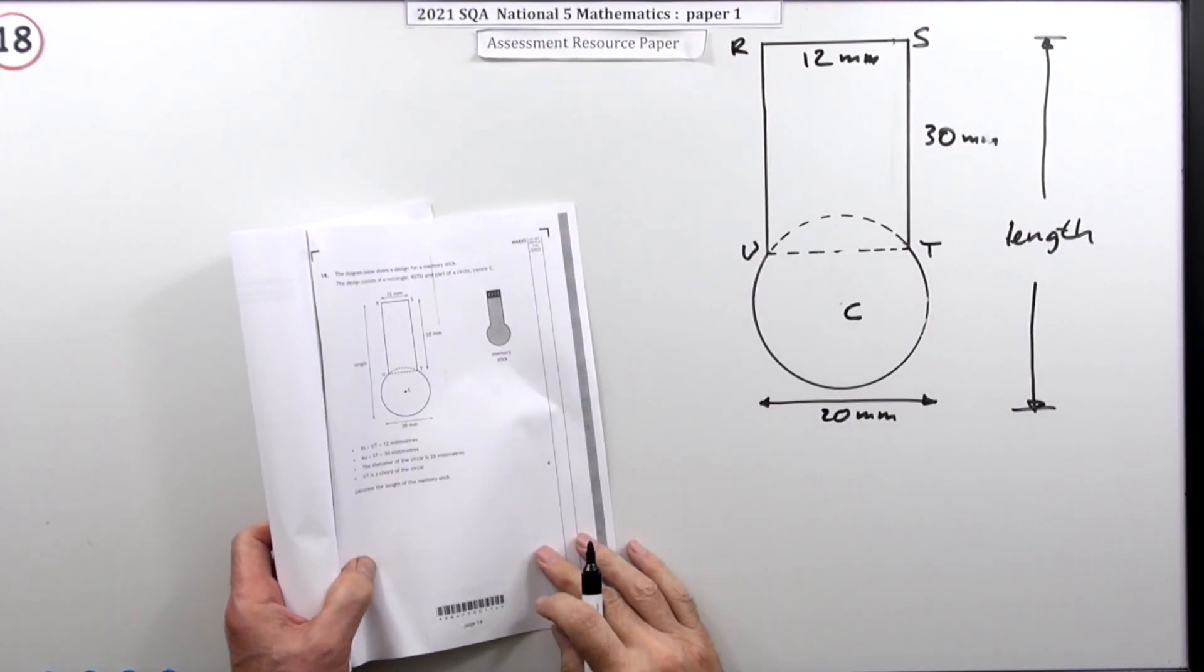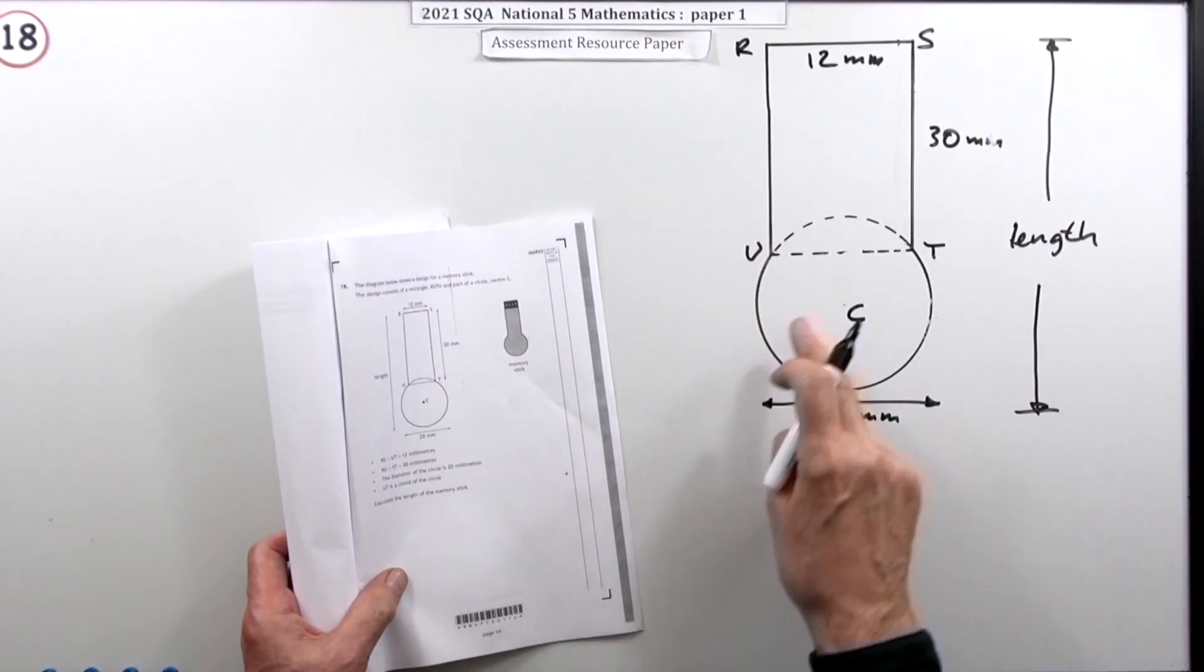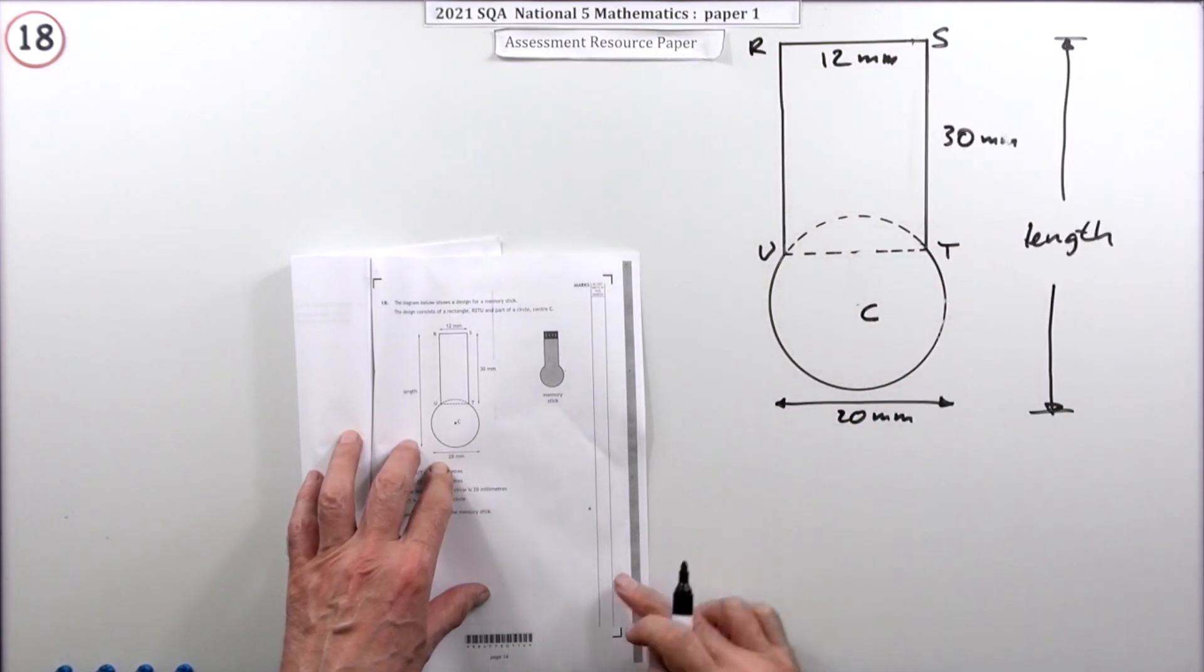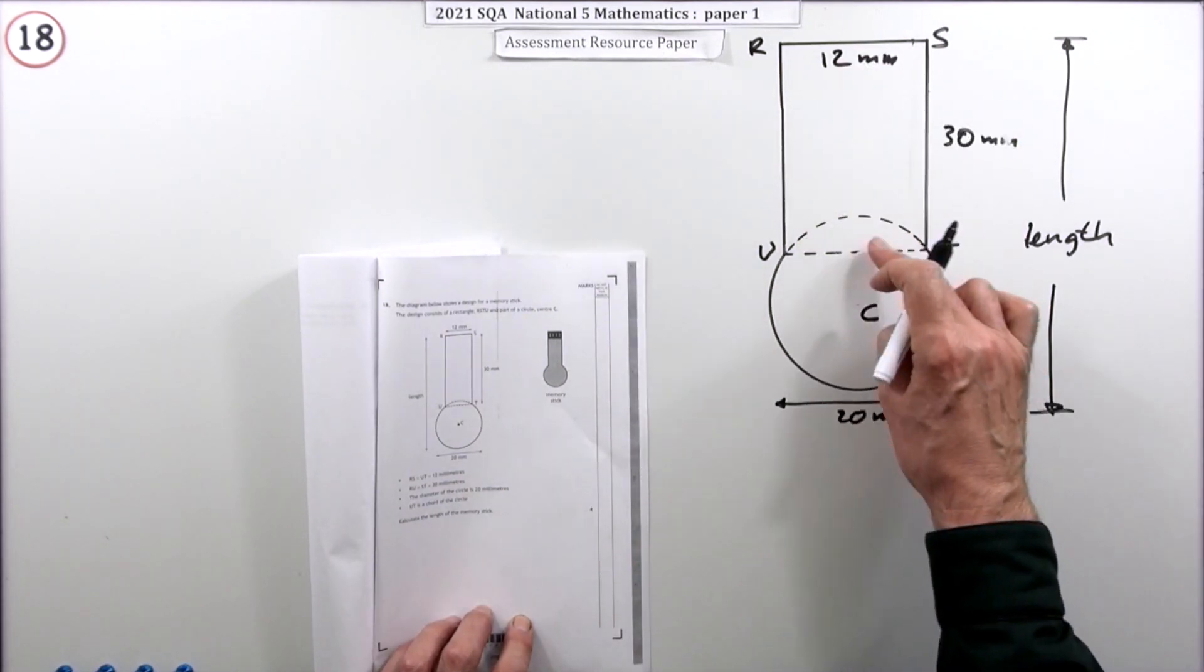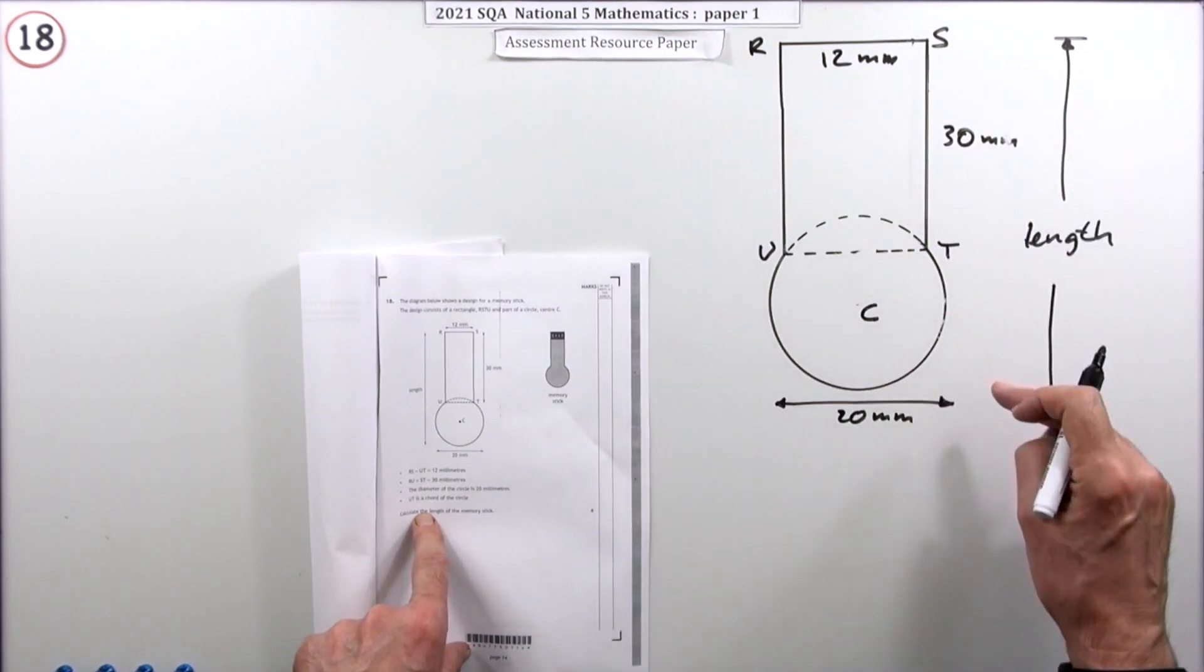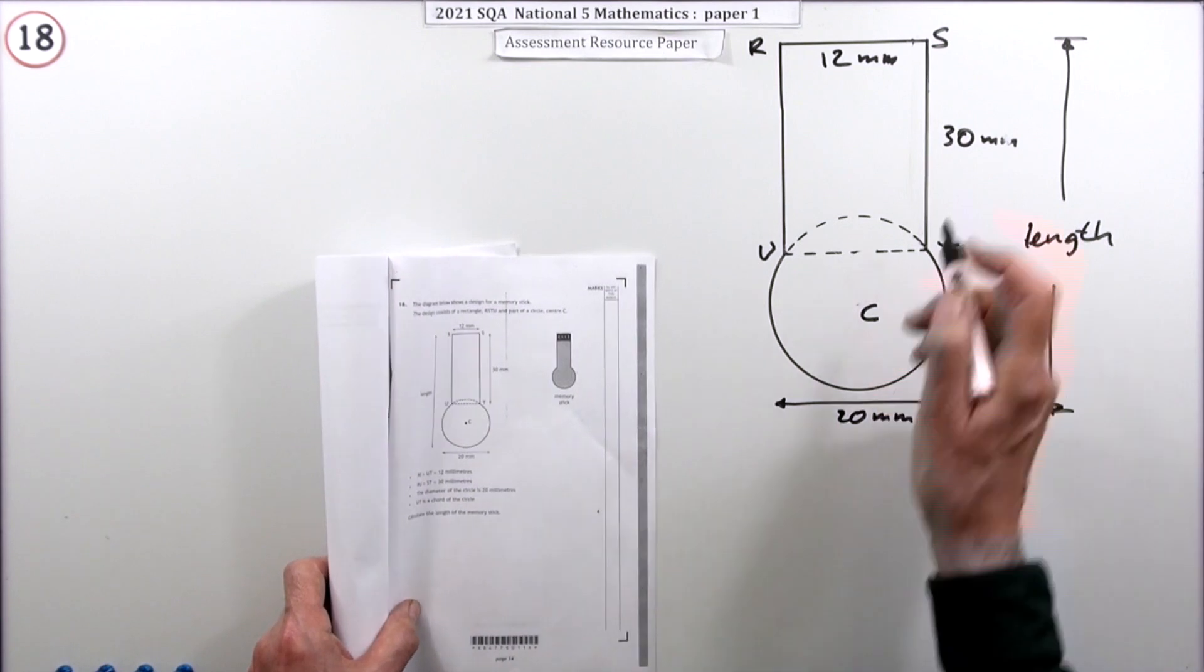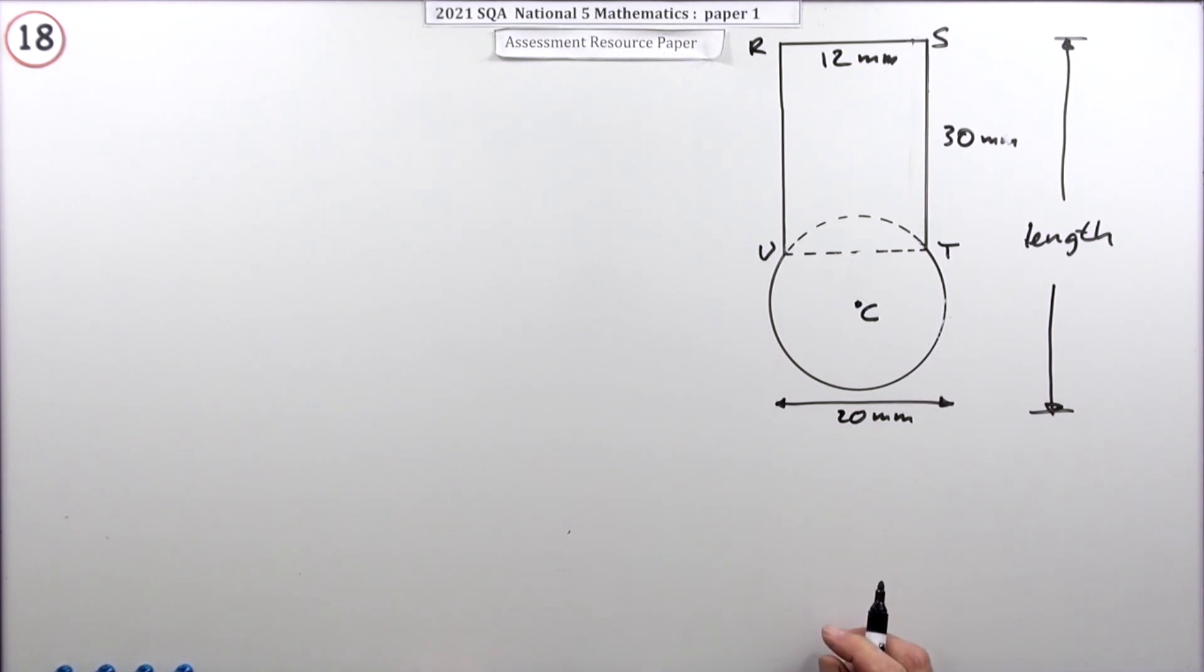Number 18 from paper one of the 2021 National Five Maths resource paper, a four-mark question. It's a calculations in a circle question. The shape has a rectangle 12 by 30 millimeters and a circle with diameter 20 that overlap. You have to calculate the total length, which won't be the height of the rectangle and the circle diameter because there's this overlap.